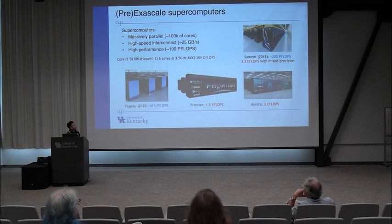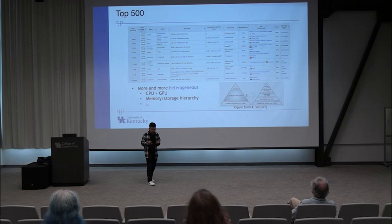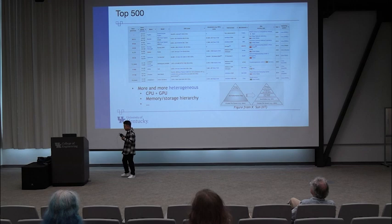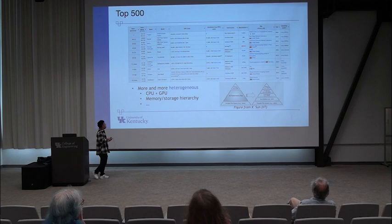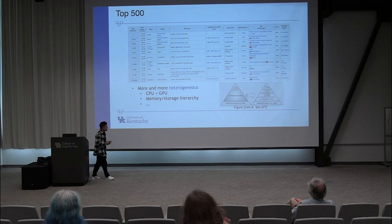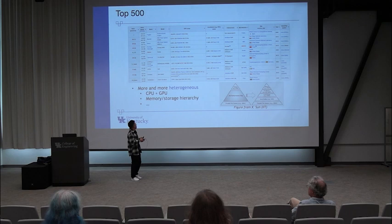Every year, the top 500 computing systems are ranked at two conferences: the International Supercomputing Conference and the SC Supercomputing Conference. This process finds the fastest computers in the world. From this table, we can see a very typical trend. First, most of these systems have heterogeneous architectures involving multiple computing units such as CPU and GPU. You need to be able to perform heterogeneous computing to achieve high performance.